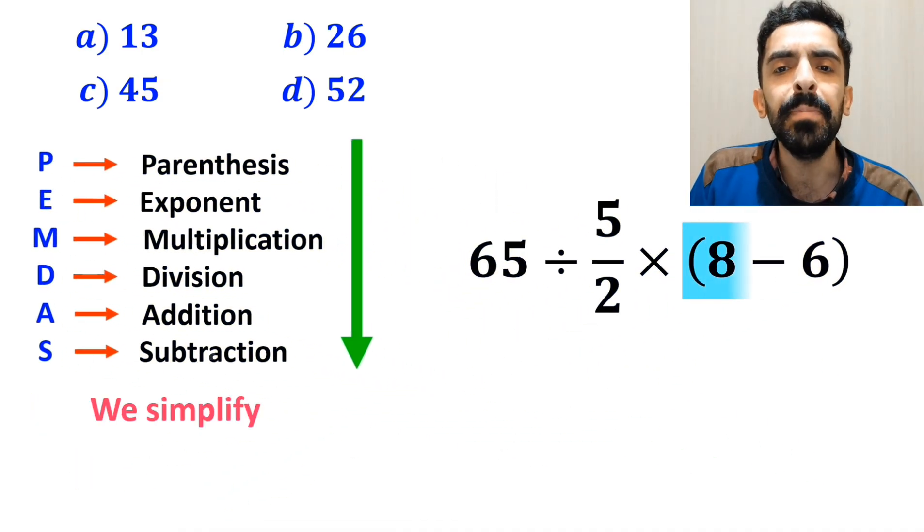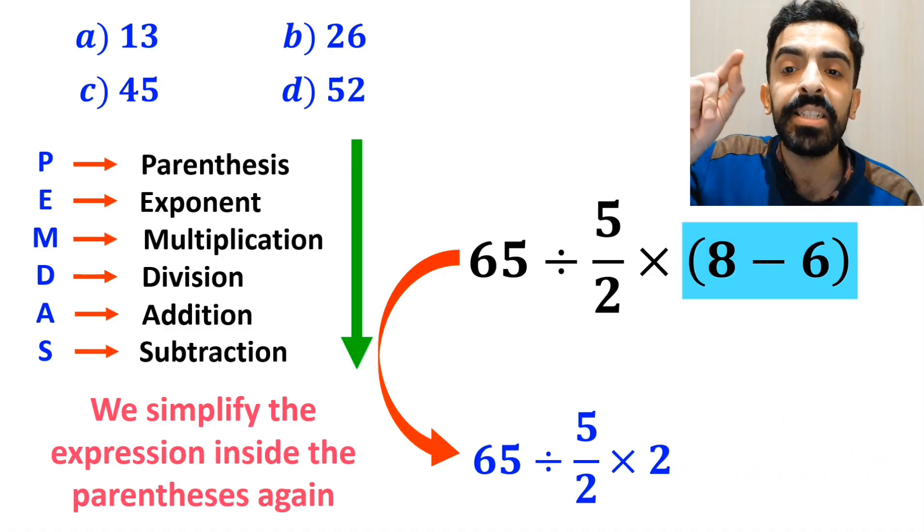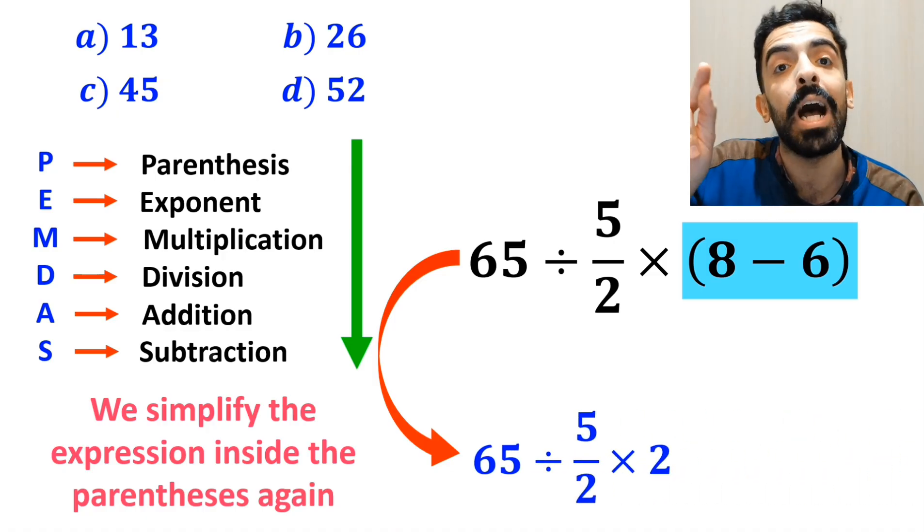In the next step, we simplify the expression inside the parentheses again. And instead of this expression, we can write 65 divided by 5 over 2 times 2.